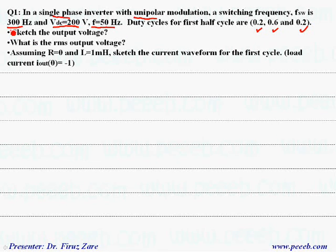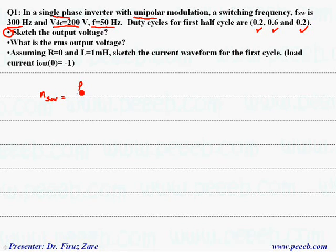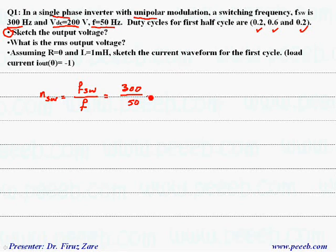Section A: we have to find the output voltage. Let's start with the number of switchings per cycle. The number of switchings per cycle is switching frequency divided by output frequency, which in this example is 300 over 50, equal to 6. That means over one cycle we have six switchings.